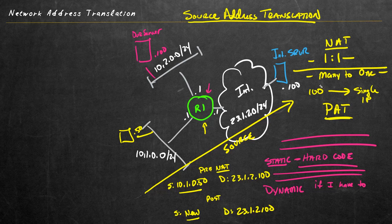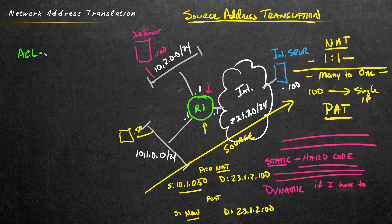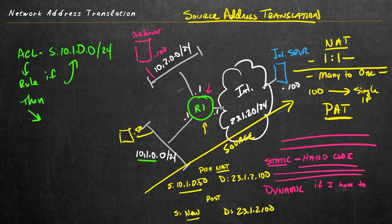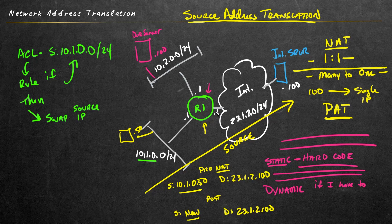If we're going to implement source address translation using PAT with many-to-one and do it dynamically, it works like this: on router one, we create an access control list that identifies traffic sourced from 10.1.0 anything. We include that in an address translation rule that says if traffic matches that source, swap out the source address with the IP address on the outside interface. Using a single IP address on an interface or from a pool is an implementation of PAT — many-to-one.